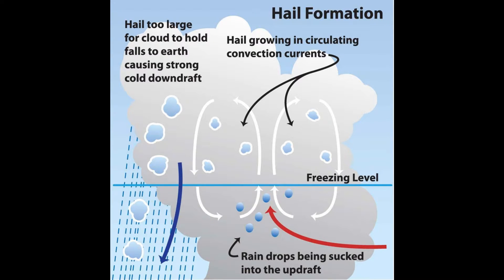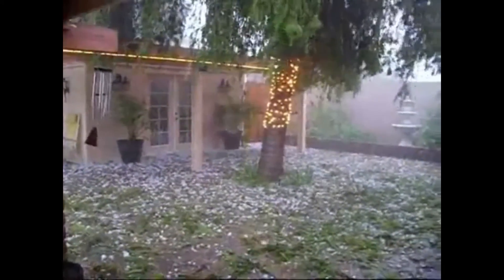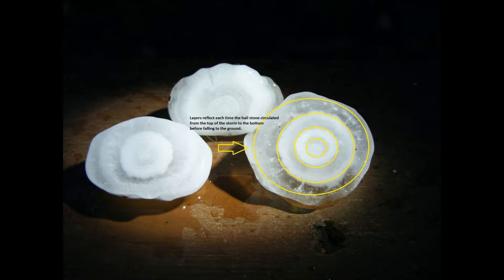The updraft winds get weaker with height and eventually the hailstone gets too heavy for the wind to keep it in the air. The hailstone then starts to fall through the cloud again. And if the updrafts are strong enough near the bottom of the cloud, the hailstone may once again be forced to rise up through the cloud. As it rises, more water condenses around the stone and causes it to grow in size, effectively gathering a layer. If you find a hailstone that is big enough, you can actually break it open and see the layers inside.